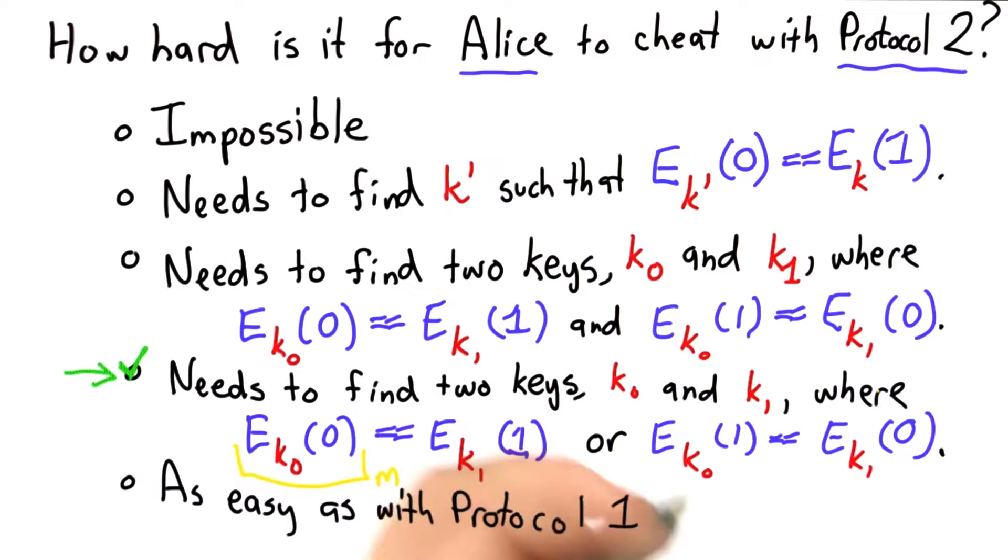If she finds a key pair like this, well then she can do the same thing. She can reveal this as the message, and then based on Bob's guess, reveal either k1 or k0. Either of these would also allow her to cheat.